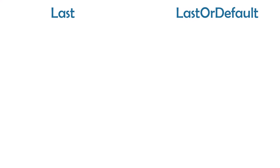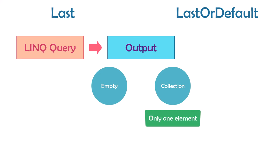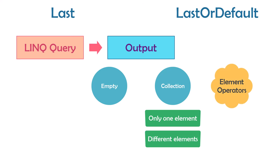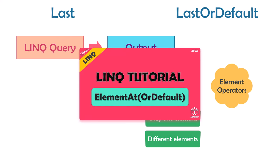In the first video about element operators I mentioned that each LINQ query has an output. This output could be empty or it could be a collection of elements. The collection could contain only one element or more than one. Sometimes we don't need all elements but only one specific element. To get a specific element we can use element operators, also within the query to filter data and get only one element.